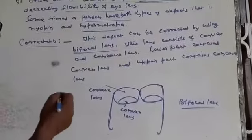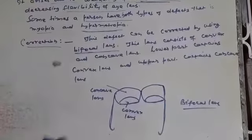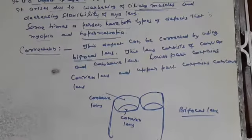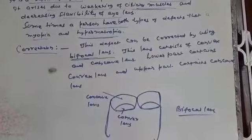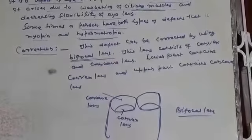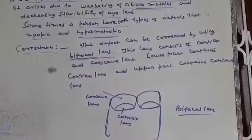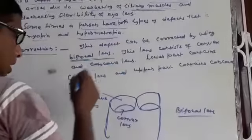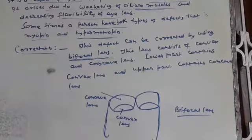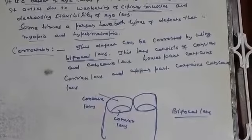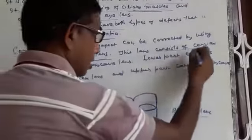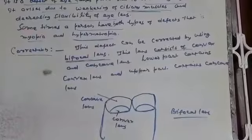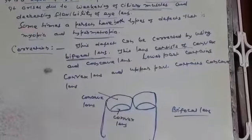Bifocal lens means two lenses in a single lens, which I have drawn in the figure. Because this lens helps to see nearby objects as well as distant objects. There may be a question, what is bifocal lens? A lens containing convex as well as concave. This lens consists of convex lens as well as concave lens.